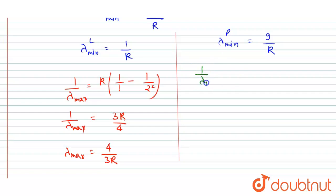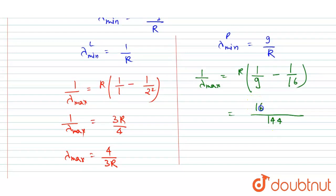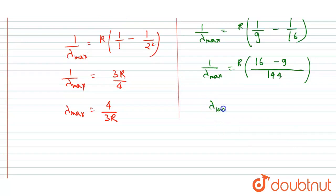For Paschen, 1/λ_max = R·(1/9 - 1/16) = R·(16 - 9)/(9×16) = 7R/144. Therefore lambda max for Paschen equals 144/(7R).